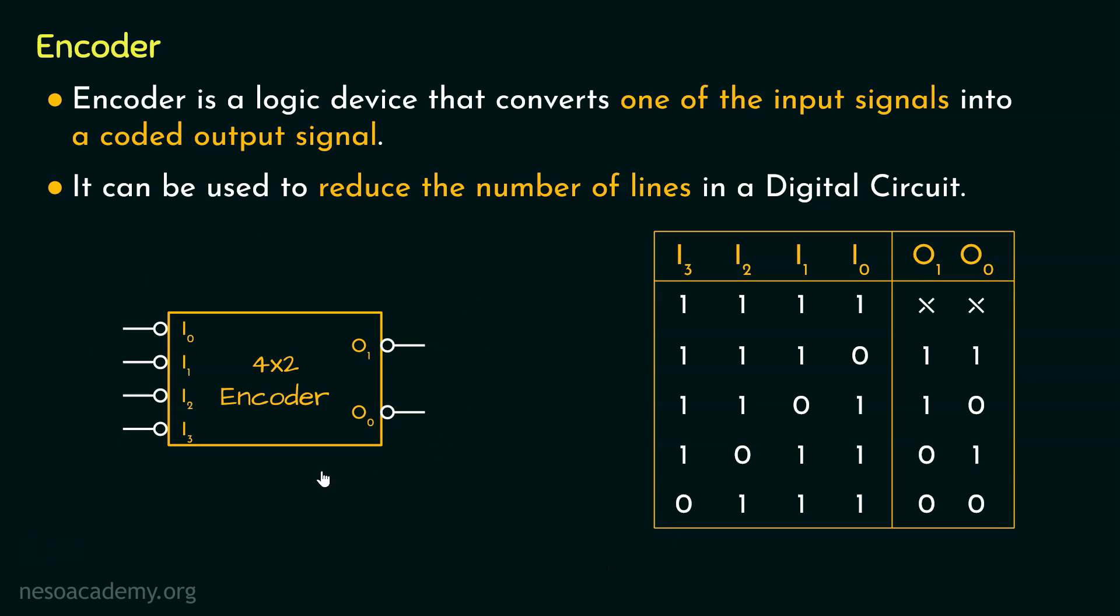So basically, the encoder, which happens to be a logic device that converts one of the input signals, any one of these, into a coded output signal. Try to understand this. The code which states that the input signal I3 is high is this one. In this pattern, we have got 0 stating I3 is high and the rest of the lines are low. That is, there are no inputs coming from these lines. And what is the code for that? It is 00.